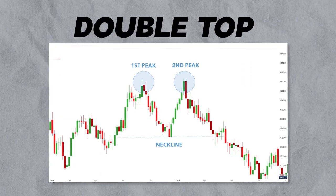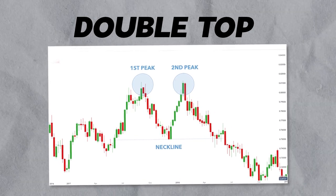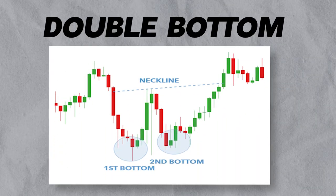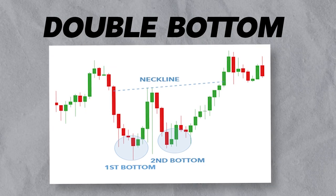A double top occurs when a stock reaches a high price, then pulls back, and then reaches that same high price again before falling. This is often considered a bearish signal — it indicates that buyers are losing interest in the stock and it's likely to drop in value. On the other hand, a double bottom occurs when a stock reaches a low price, bounces back up, and then reaches that same low price again before rising. This pattern is often considered a bullish signal, as it indicates that buyers are starting to show interest in the stock and it's likely to rise in value.